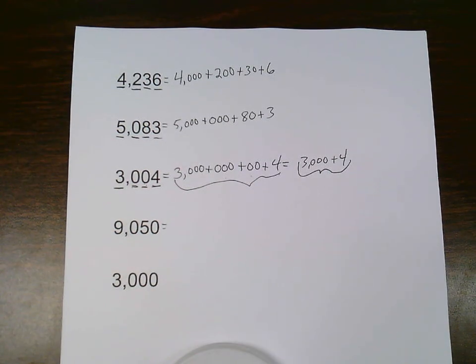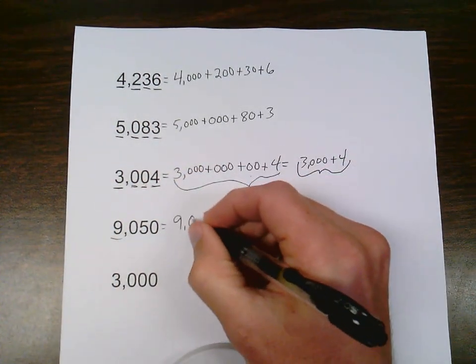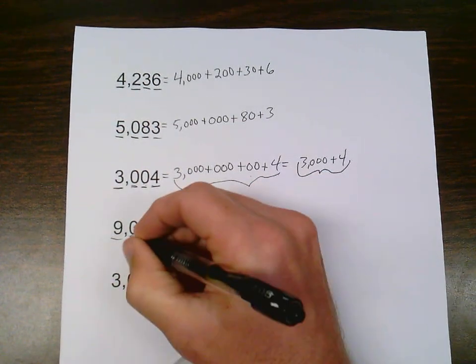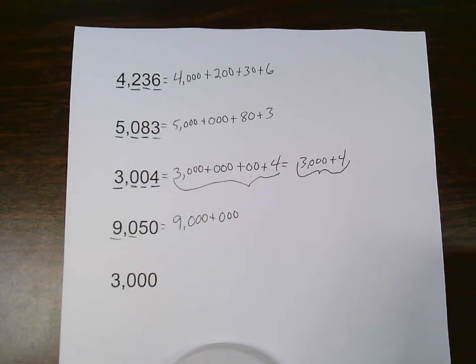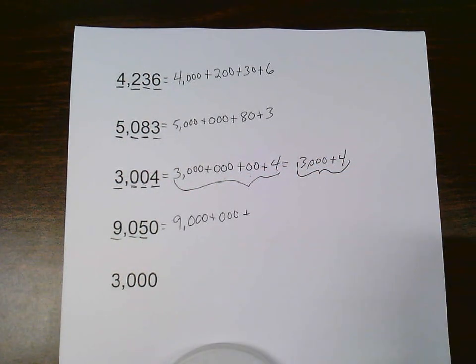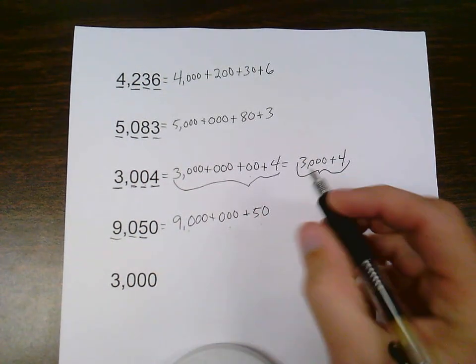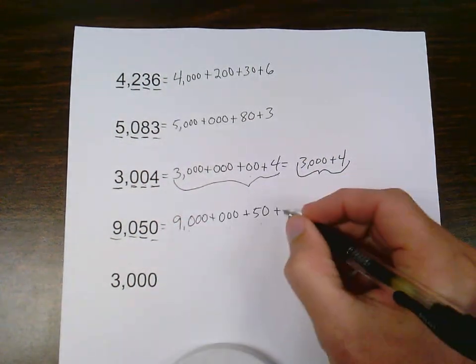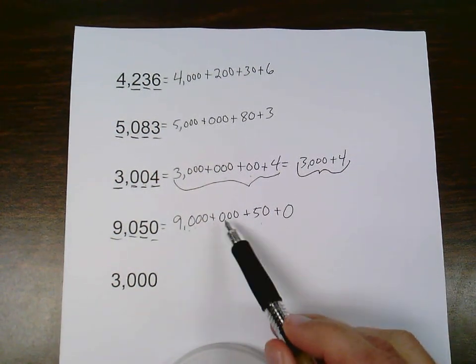9,050. The 9 in the thousands place is worth 9,000. Plus no hundreds, so that's worth 3 zeros. A 5 in the tens place is worth 50. So I got 4, 3, 2. And a zero in the ones place gives me one zero there to complete my pattern. 4, 3, 2, 1.